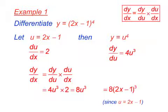Substituting into the chain rule, we have 4u cubed times 2, which gives us 8u cubed. And substituting back for u, we get an answer of 8(2x minus 1) all to the power of 3.